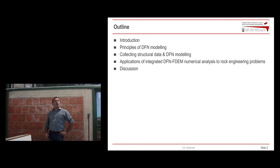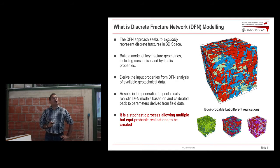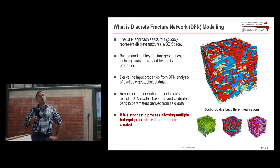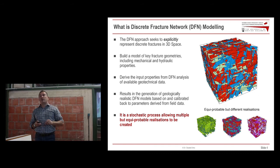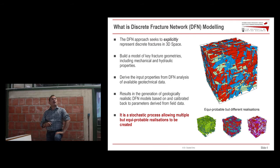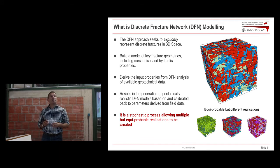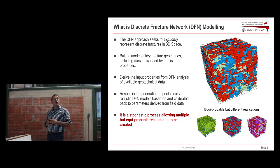For people not familiar with the approach, DFN modeling is basically a method to build three-dimensional representations of fractured rock masses. We collect data in the field, we use that data to build these models, and we build fractures within the volume. The volume doesn't necessarily have to be a cube — it can be any volume. Of course, as the volume becomes more complicated, the more complicated it is to build the model.